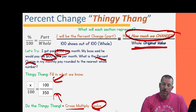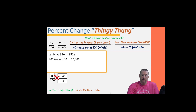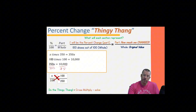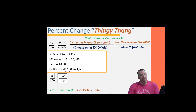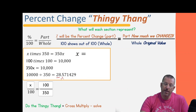Using the thingy thang, we cross multiply: x times 350 gives us 350x, and 100 times 100 gives us 10,000. So our equation is 350x = 10,000. We divide both sides by 350, giving us 10,000 ÷ 350. Rounding to the nearest whole number: we have 28 wholes, and the next digit is 5, so it rounds up. x equals 29 percent.